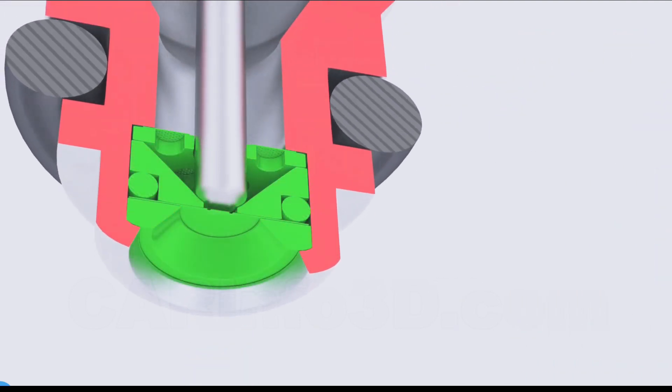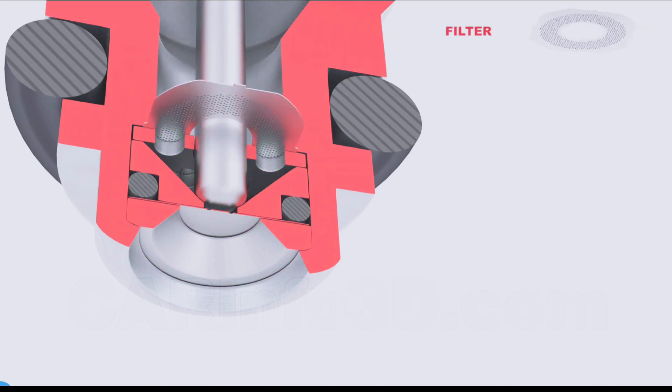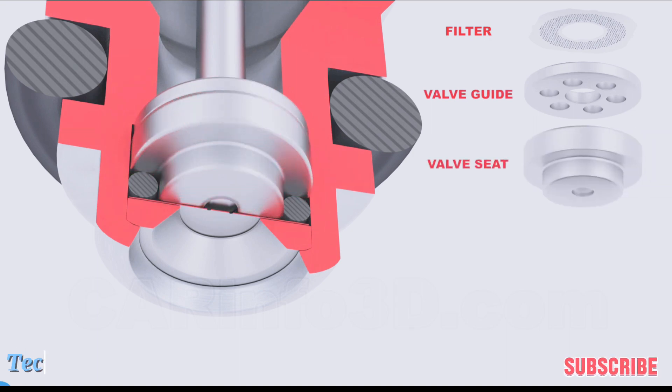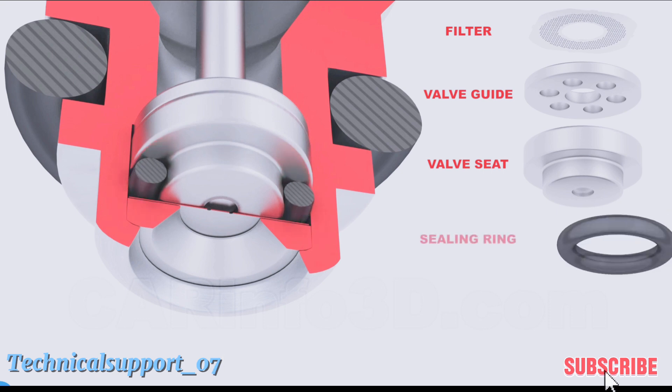Now let's take a closer look at the valve seat and the parts that go with it. In this design, first comes an additional filter plate, and then the valve guide, which is attached to the valve seat. The design also features a sealing ring.